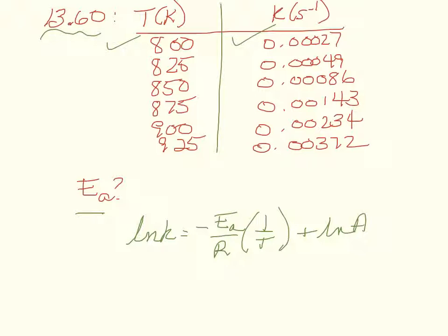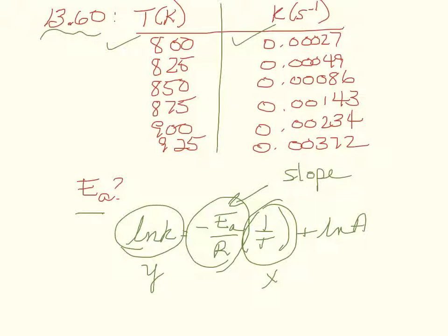So what you need to do to find activation energy is you need to make a plot of the natural log of the rate constant versus 1 over T and then you need to find the slope of that plot, which will be negative of the activation energy over the gas constant. The right way to do this would be to graph the correct x and y factors here.